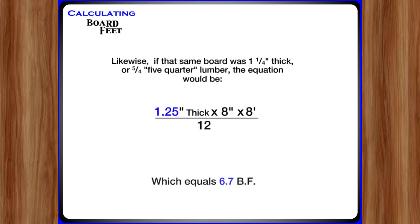Likewise, if that same board was one and one quarter inches thick, or five quarter lumber, the equation would be 1.25 times 8 times 8 divided by 12, which equals 6.7 board feet.